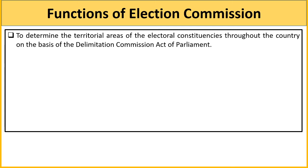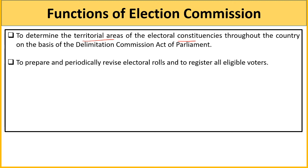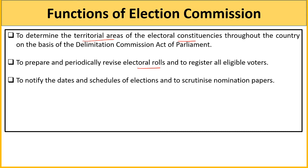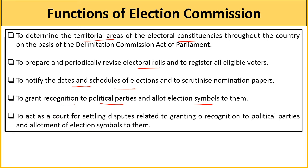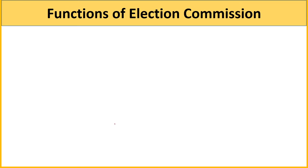Election Commission ke functions: Electoral constituencies determine karna - yeh delimitation commission karta hai. Electoral roles prepare aur revise karna. Election date aur schedule fix karna, nomination papers dekhna. Political parties ko symbols allot karna. Dispute related to recognition of a political party aur allotment of election symbols dekhna - yahi do disputes Election Commission dekhta hai. Electoral arrangement related officers appoint karna. Code of conduct determine karna. Parties aur candidates ke liye radio aur TV par equal time ka roster prepare karna.